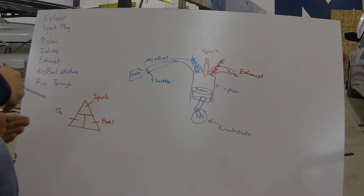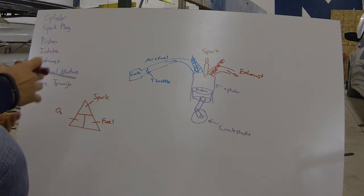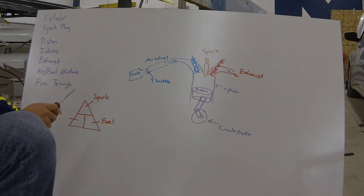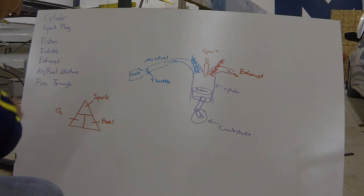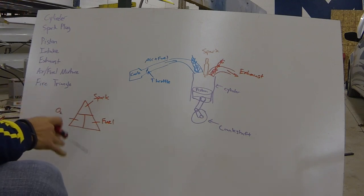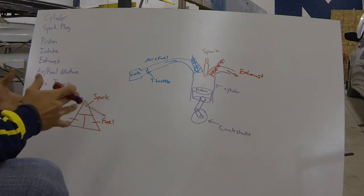The fire triangle are the three things that you need to make fire. Obviously fire is what makes our engines run, or the ignition of fuel. So the three things we need for the engine to run are fuel, spark, and oxygen. Without those three things, the engine will not run and you will not get fire.